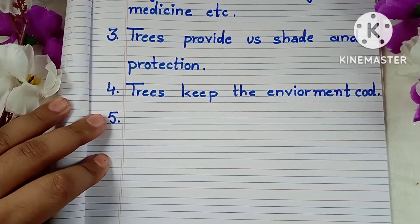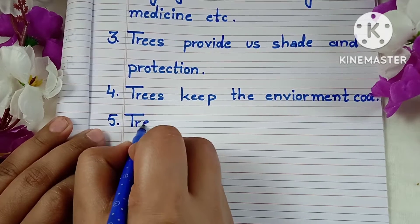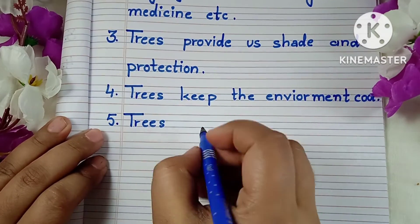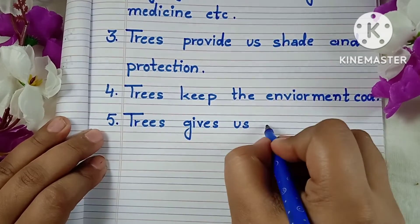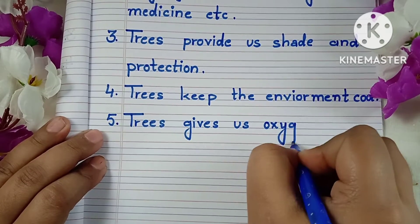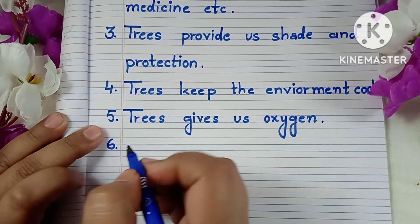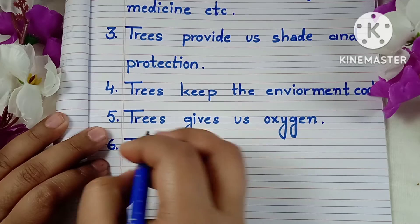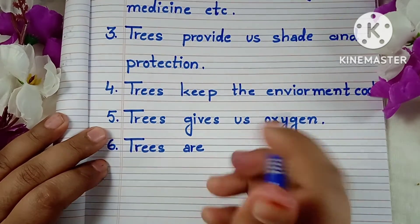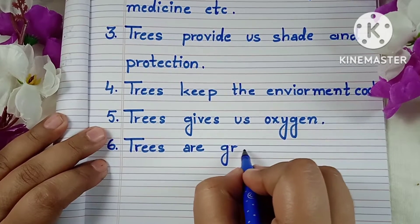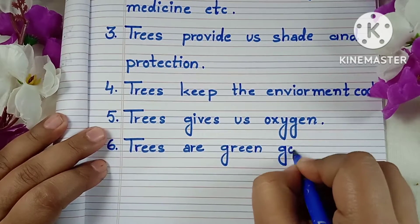Number 5: Trees give us oxygen. Number 6: Trees are green gold.